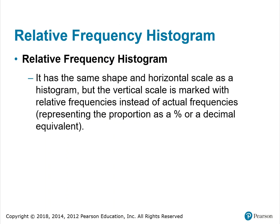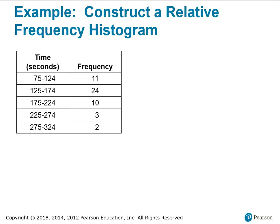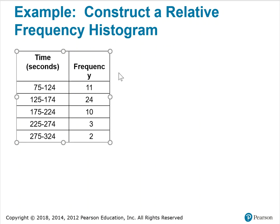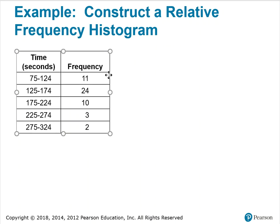A relative frequency histogram has the same shape and horizontal scale as a regular histogram, but the vertical scale is marked with relative frequencies instead of actual frequencies, representing the proportion as a percent or decimal equivalent. This shows our time in seconds for McDonald's lunch service times with frequency listed as a count. To construct a relative frequency histogram, I need the relative frequency of the service times.